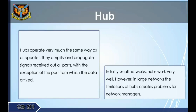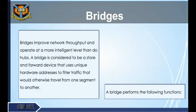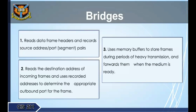Bridges improve network throughput and operate at a more intelligent level than hubs. A bridge is a store-and-forward device that uses unique hardware addresses to filter traffic that would otherwise travel from one segment to another. A bridge performs the following functions: (1) reads data frame headers and records source address-to-port segment pairs; (2) reads the destination address of incoming frames and uses recorded addresses to determine the appropriate outbound port; (3) uses memory buffers to store frames during heavy transmission and forwards them when the medium is ready.